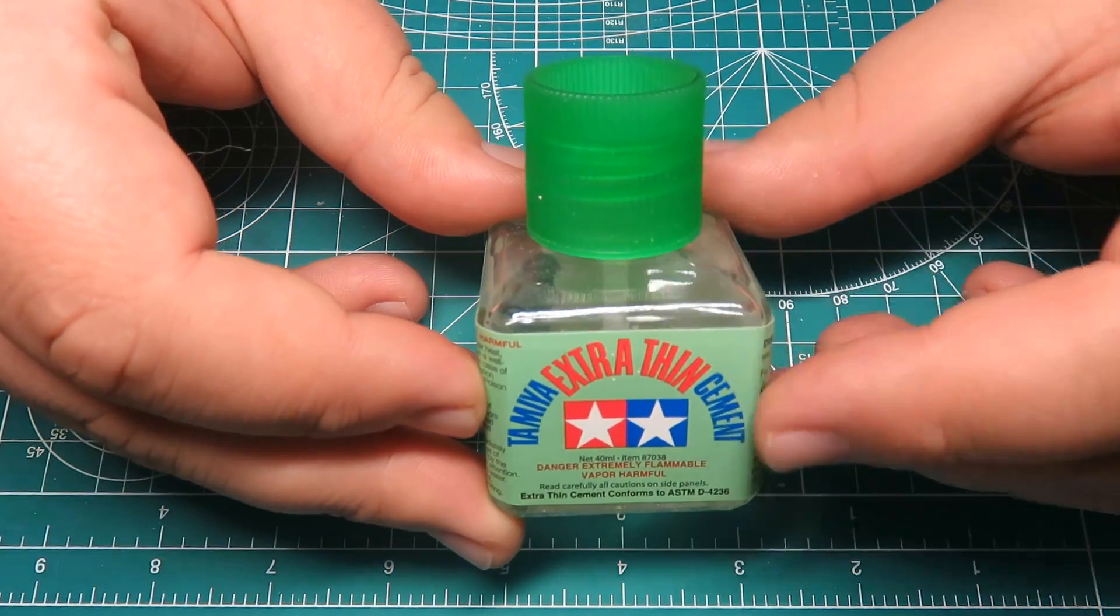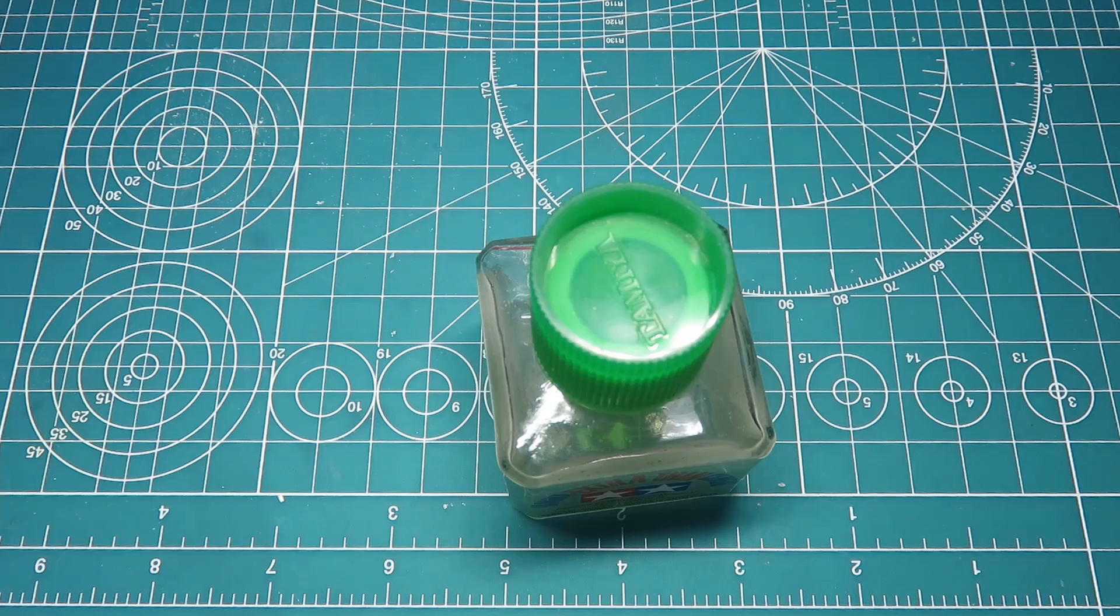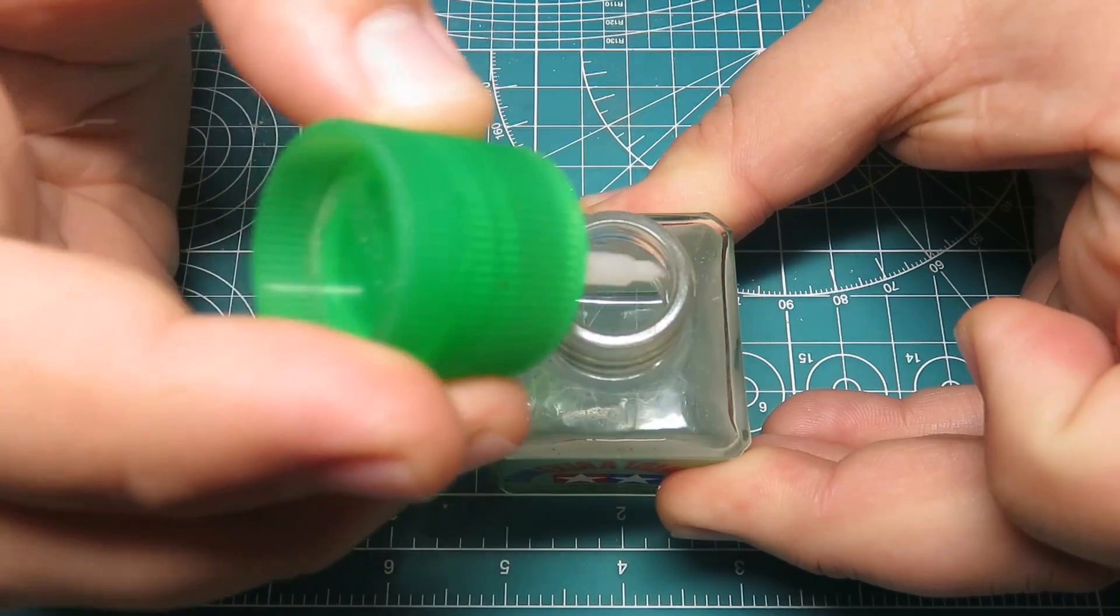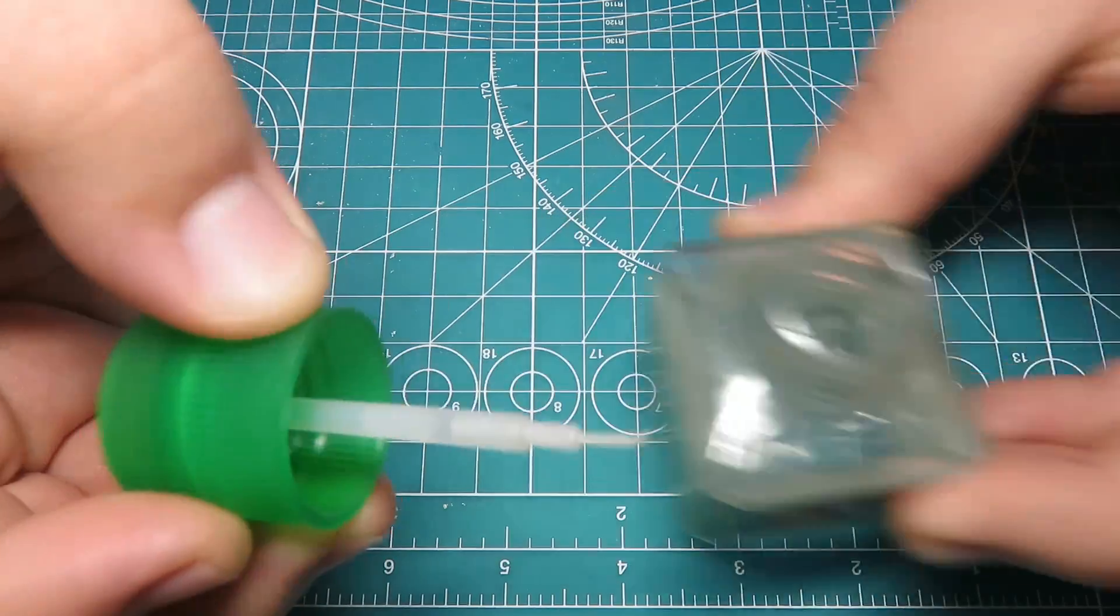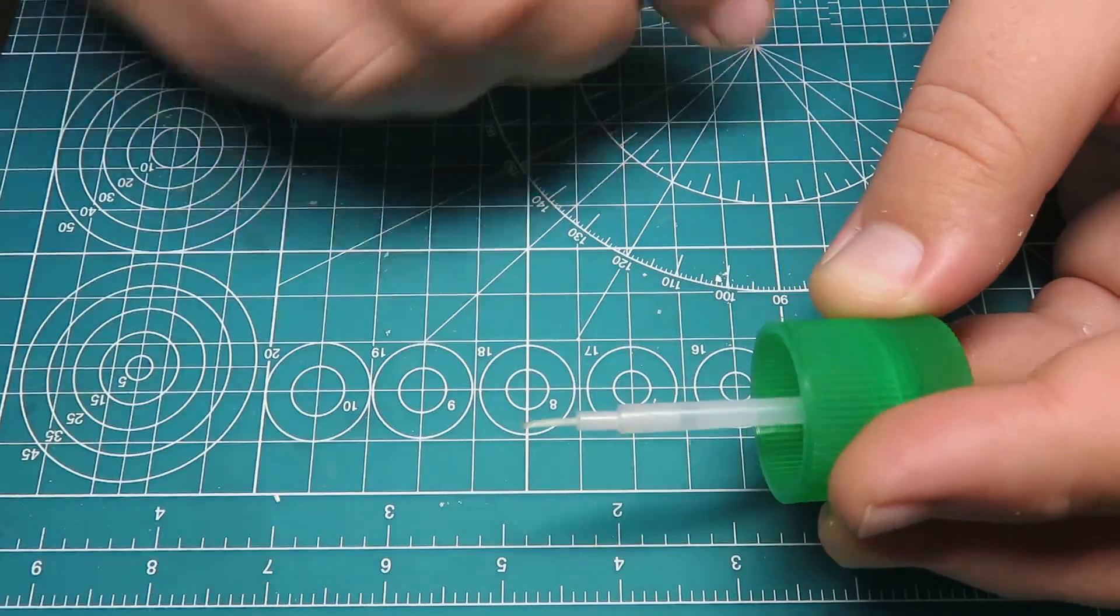So the first one we're going to be doing here is Tamiya Extra Thin Cement. Some of you may already know about this, but there might be some of you who don't. So what happens if your brush gets too close to the end here? So what we're going to do is we're going to take the cap off here.